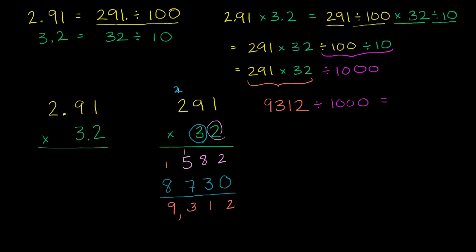And what's this going to be equal to? Well, if we start with 9,312, and I throw a decimal there, dividing by 1,000 is equivalent to moving the decimal over three places to the left. So you divide by 10, divide by 100, divide by 1,000. So that's going to be 9.312. If you divide by 1,000, you will get to 9.312.